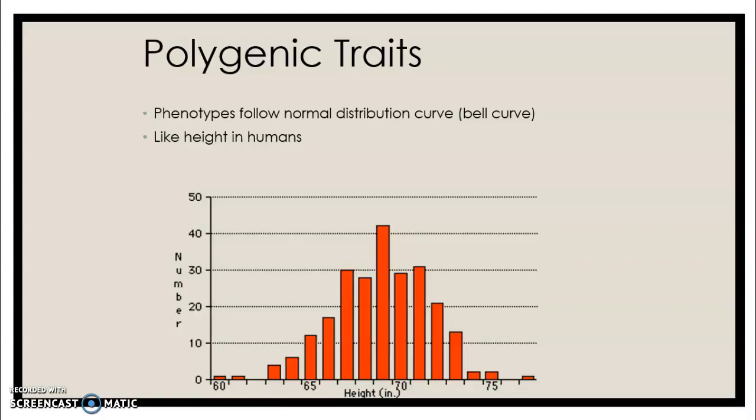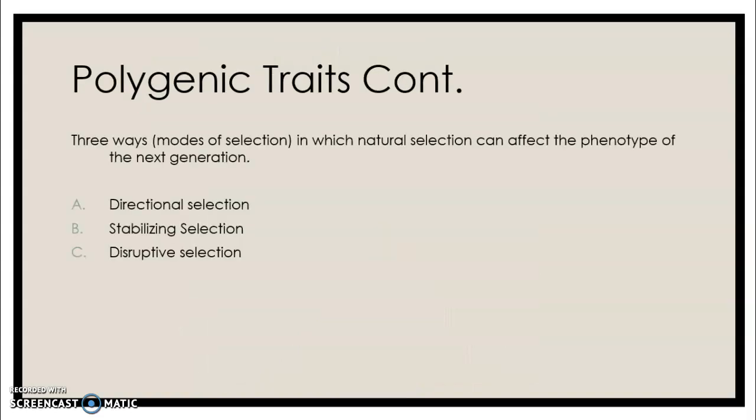Polygenic traits are controlled by many alleles. An example is height — people aren't simply six foot, five foot, or four foot; they're all the in-between heights because many different alleles control human height. When we graph these, we see a normal distribution — a bell curve — where the majority of people fall within the average, and very few people are at the extremes of really tall or really short. There are three modes of selection in which natural selection can affect the phenotype of the next generation with polygenic traits.